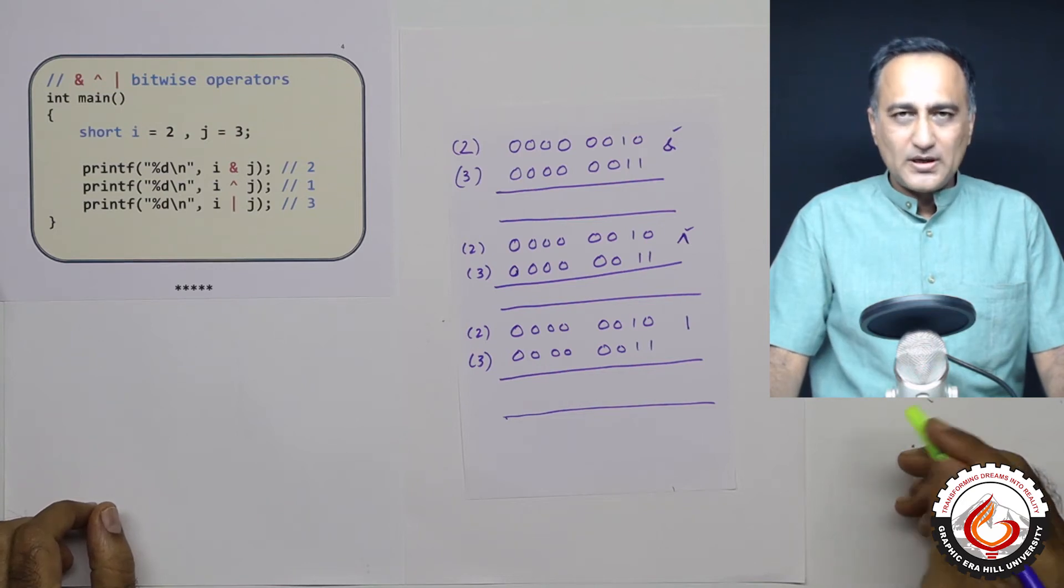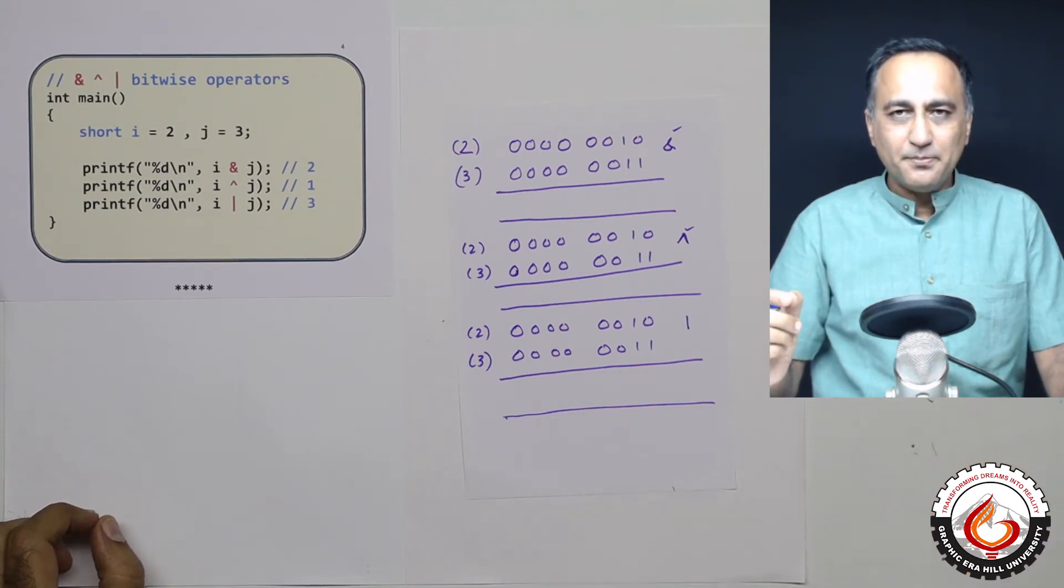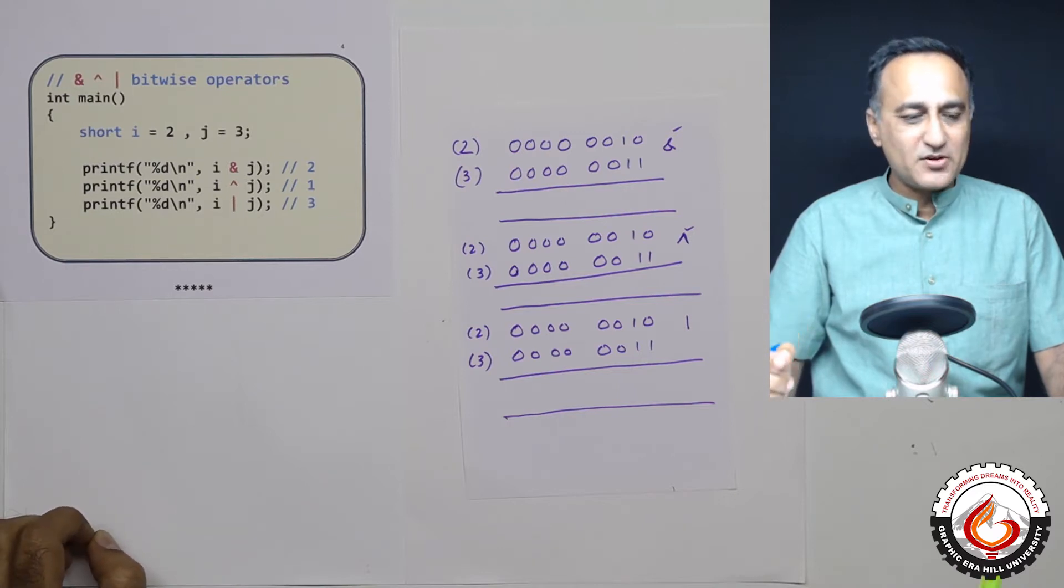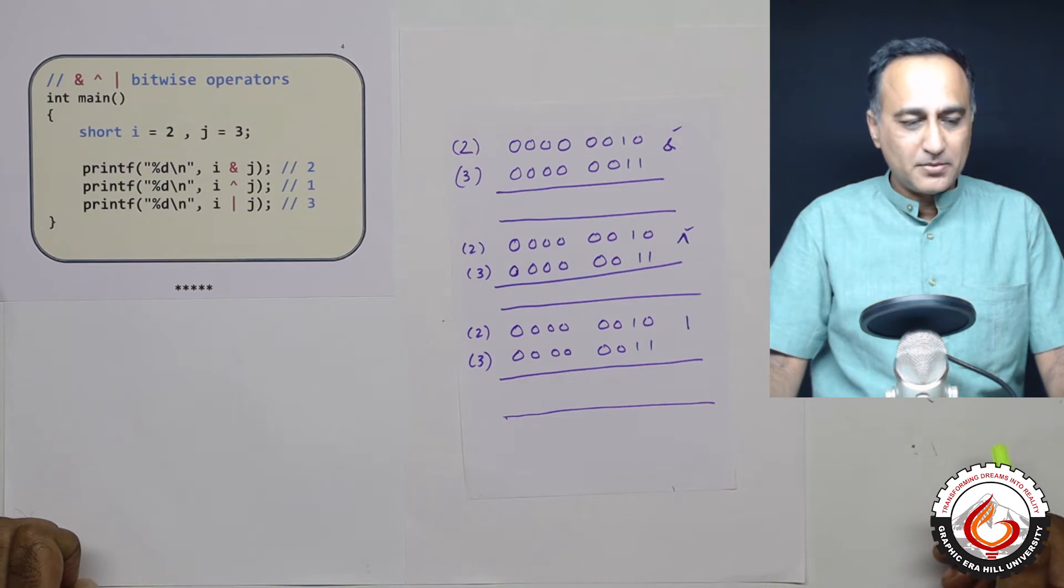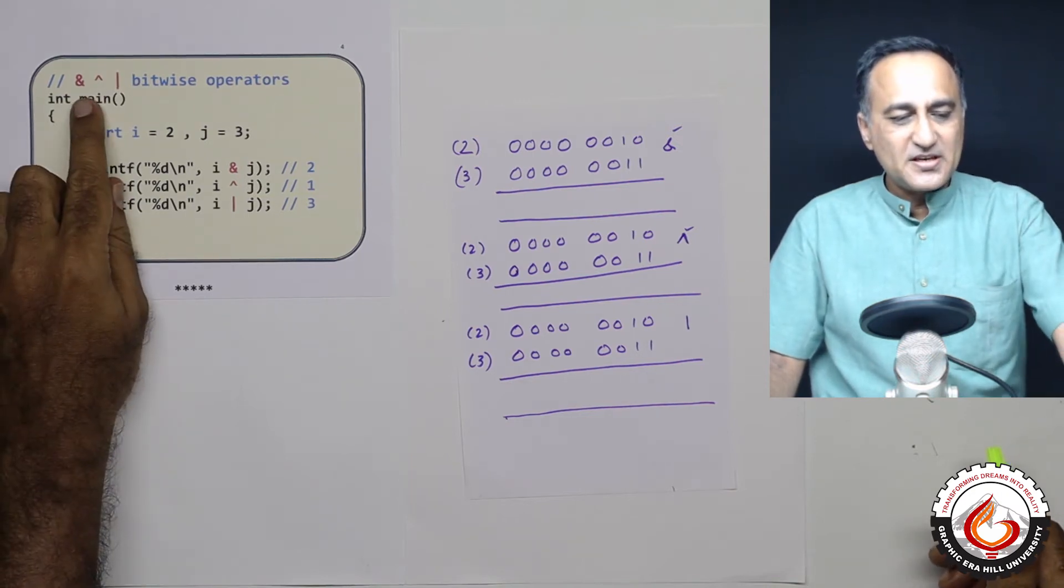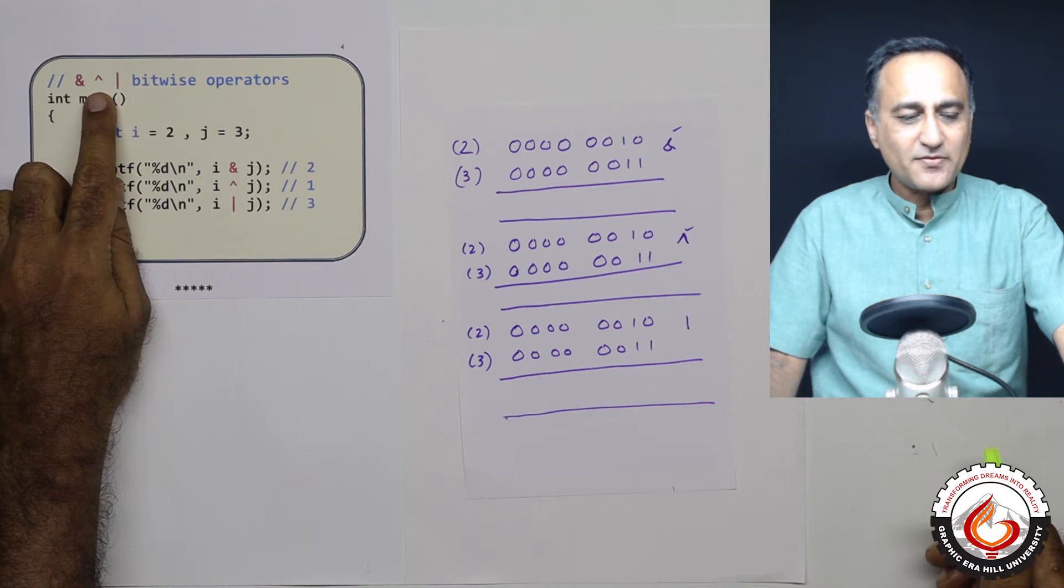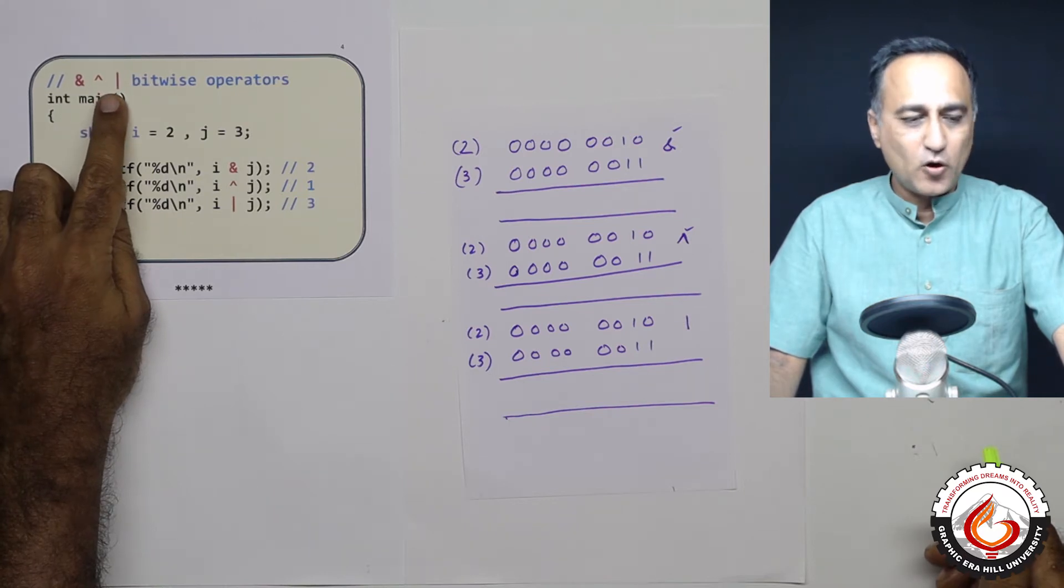AND, XOR, and OR are the three bitwise operators in C which are used for manipulating the individual bits of a binary number. The precedence of AND is higher than XOR, and the precedence of XOR is higher than the OR operator.